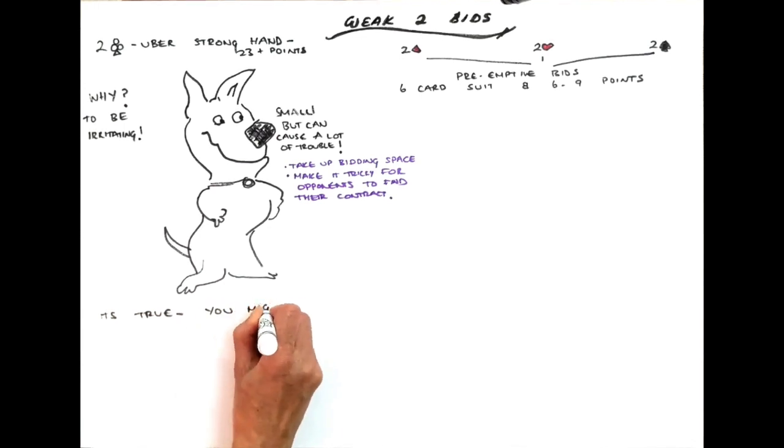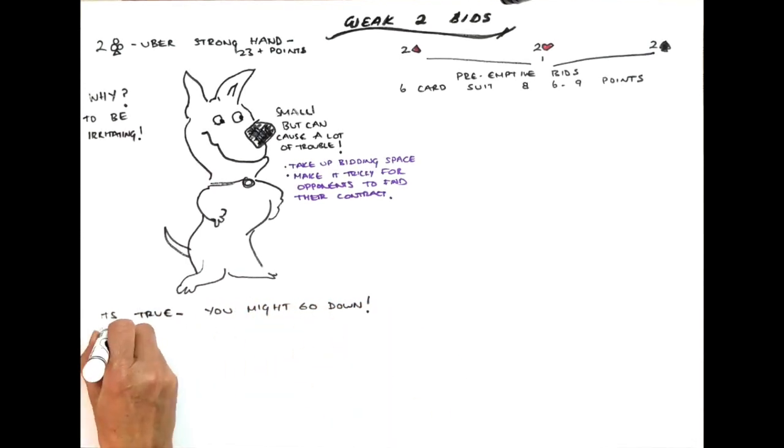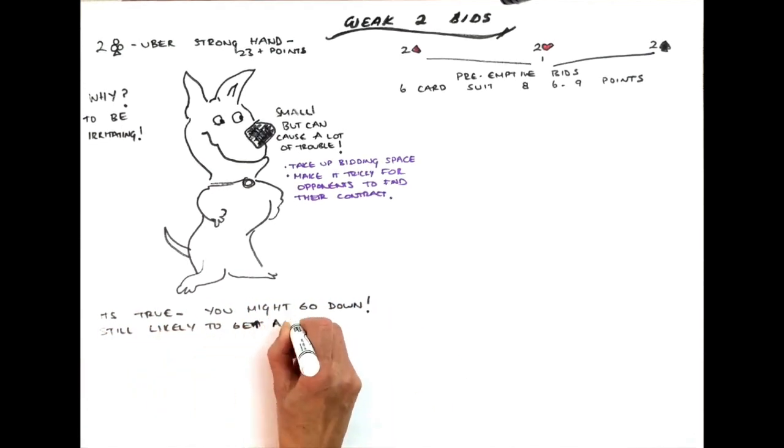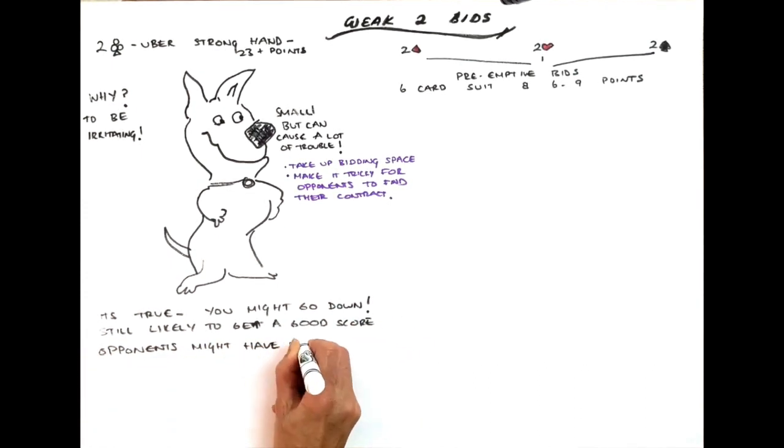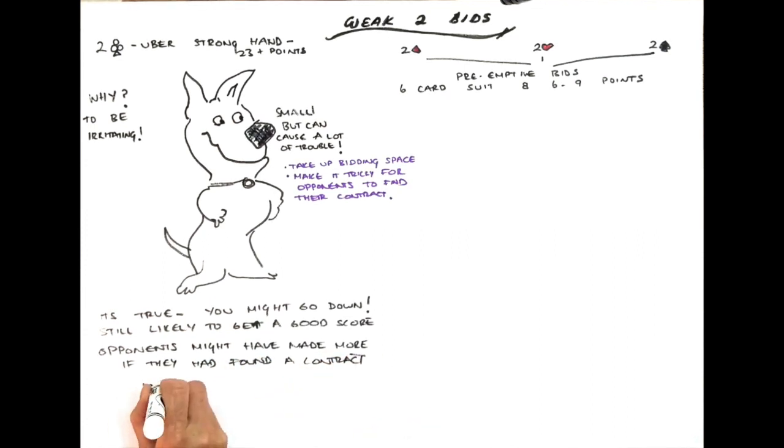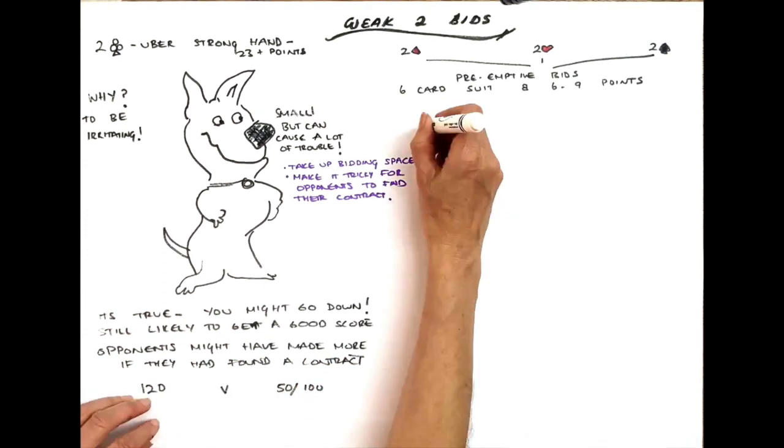It's true, you might be left in the contract and you might go down. But it's still likely to get you a good score. The opponents might have made more if they'd actually found a contract. For example, they might have made 120 against the 50 or say 100 they'll get if they bring you down.